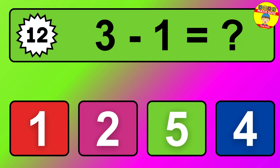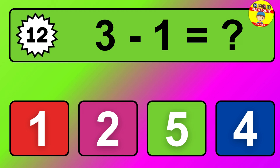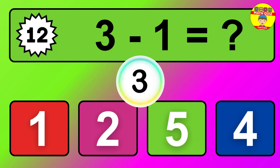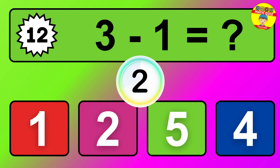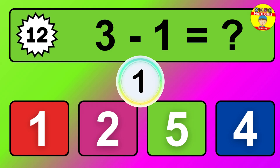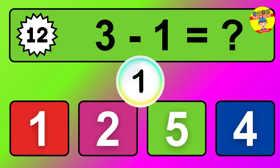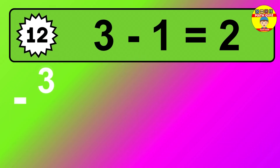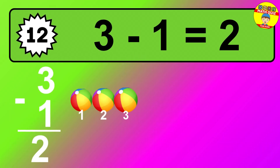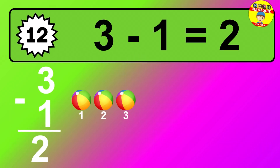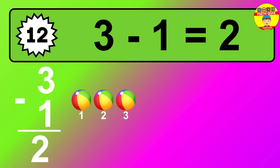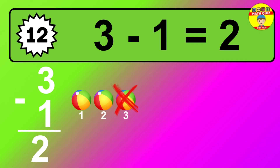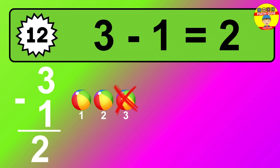Question 12. 3 minus 1 equals what? The answer is 3 minus 1 is 2. Let's count it: 1, 2.